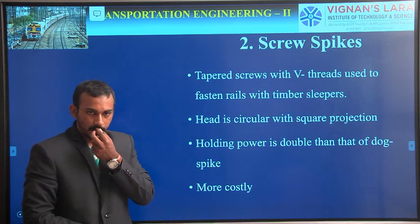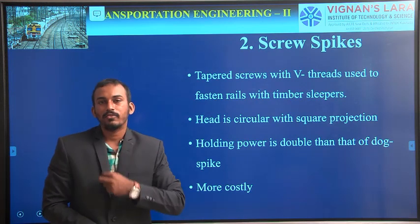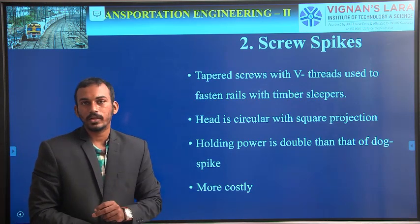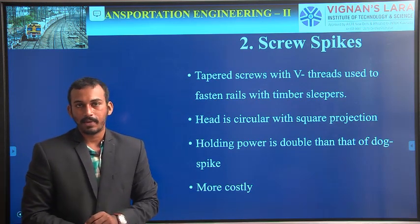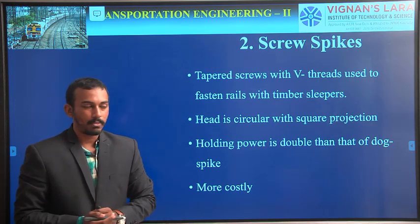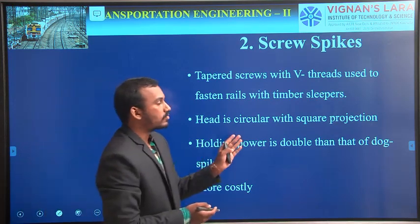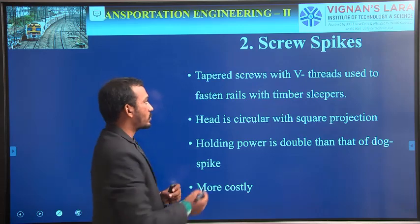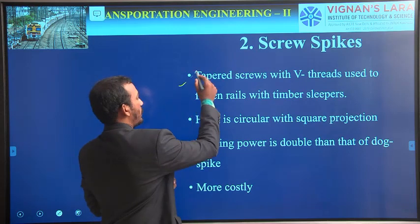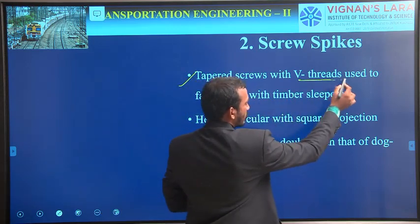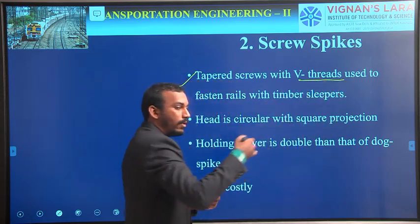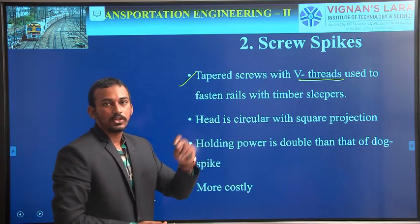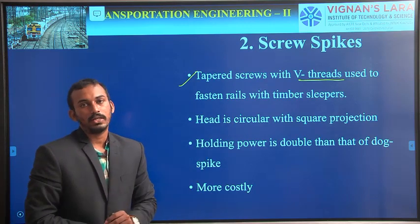Let's come to the second one, that is screw spikes. As the main disadvantage of dog spikes is they get loosened during vibrations and impact loads, the next one, screw spikes, is introduced to overcome that drawback. These screw spikes are tapered with V-threads. Here we have a thread arrangement so that it cannot get loosened during vibrations and impact loads.